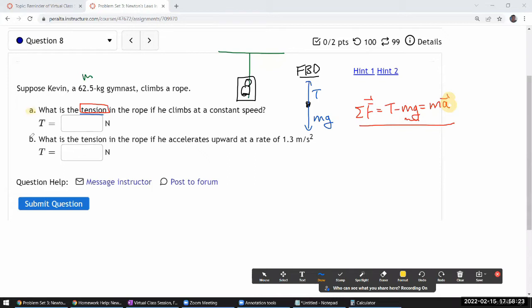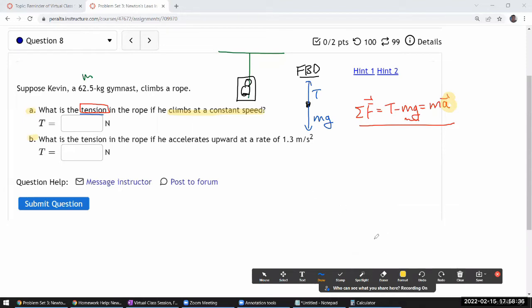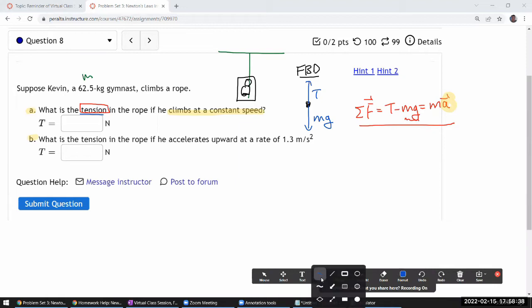So where it says if he climbs at a constant speed, if that feels like they didn't give you enough information because they didn't give you the speed, don't let it be because the phrase of constant speed.